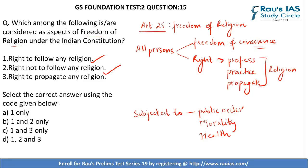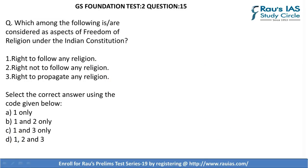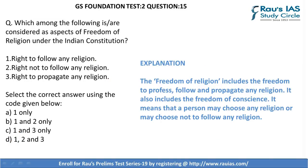Third — right to propagate any religion — is also correct. Hence, the right answer is D — 1, 2, and 3. Please have a look at the explanation.